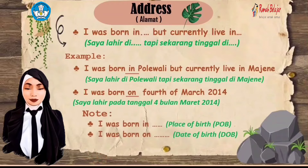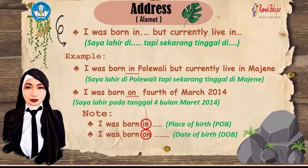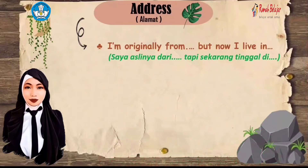'I was born in' refers to place of birth (P.O.B.), so it uses 'in' followed by a place. Whereas 'I was born on' refers to date of birth (D.O.B.), and the answer is your birth date. Next: 'I'm originally from [place] but now I live in [place].'